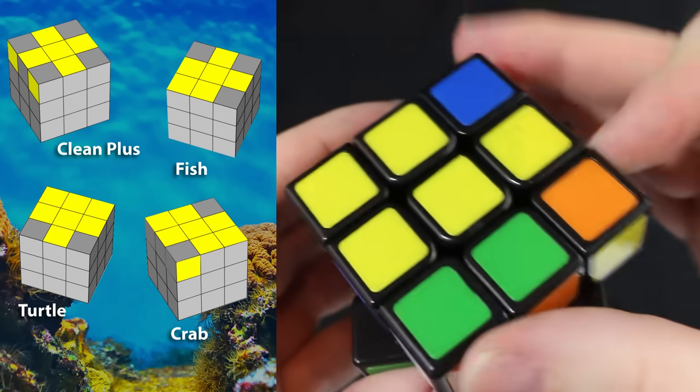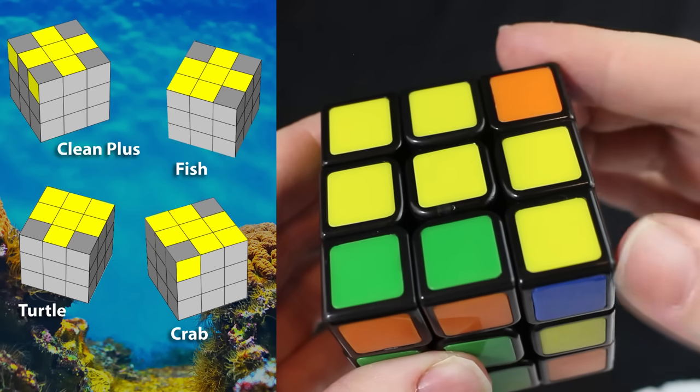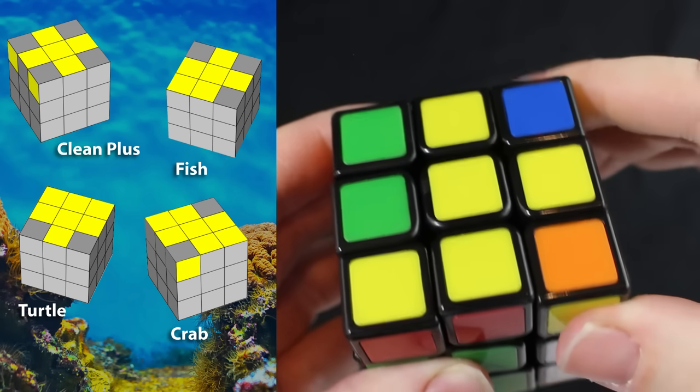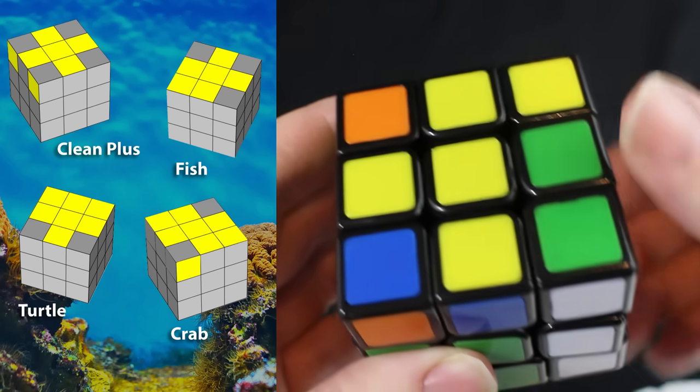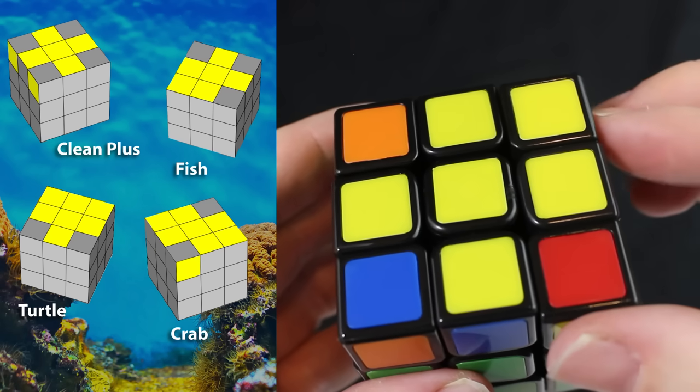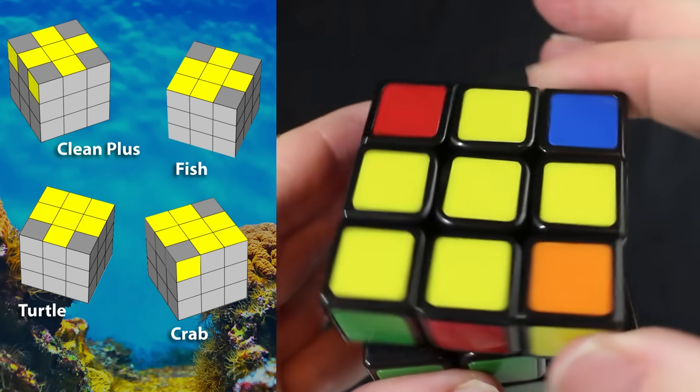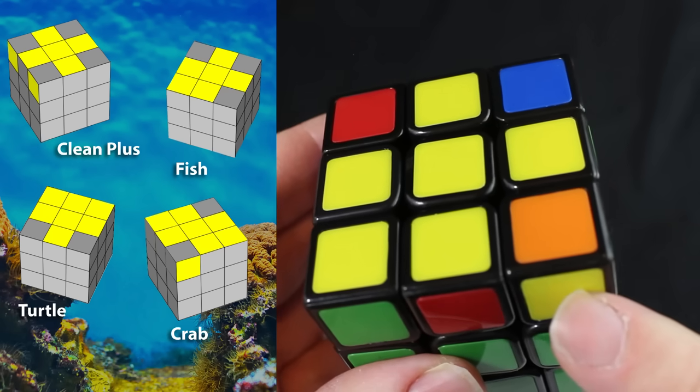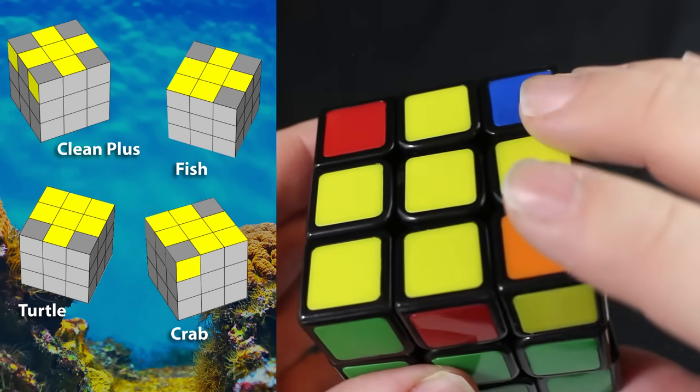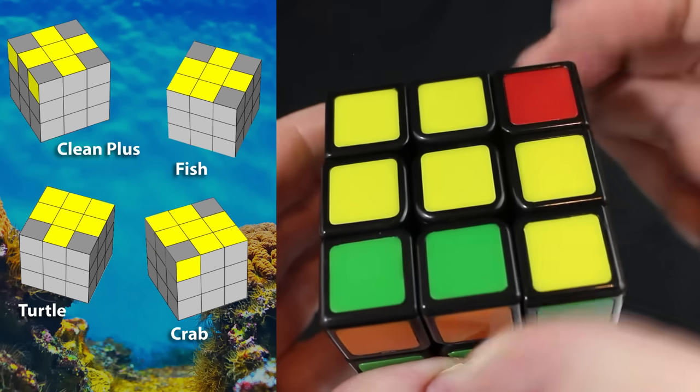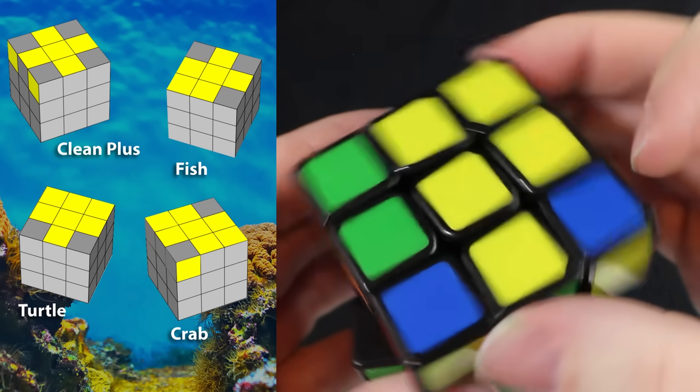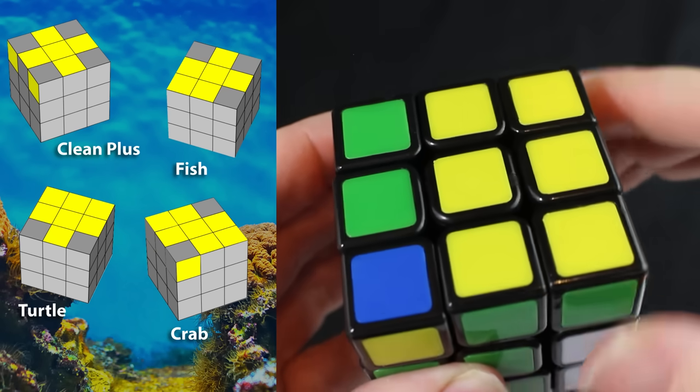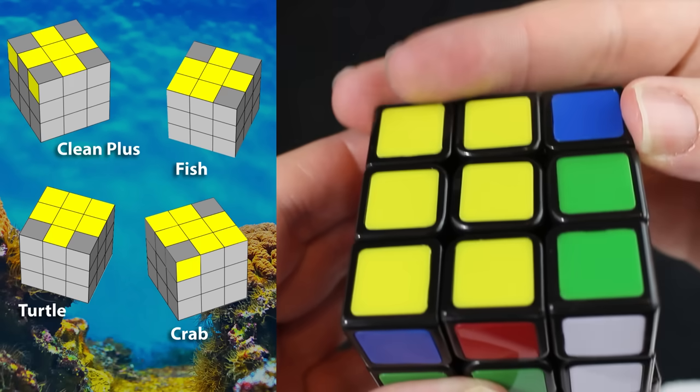Clock, clock, counter, clock, clock, flip, counter. We've got the fish again. Let's move him to the bottom left. And now he does have the fish food, which means we're about to solve the yellow side. Clock, clock, counter, clock, clock, flip, counter.